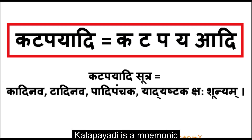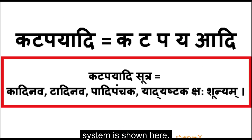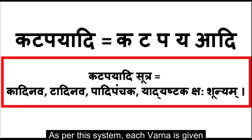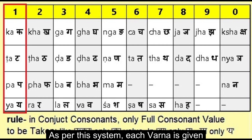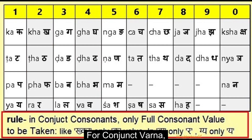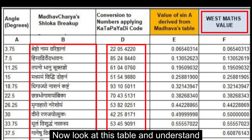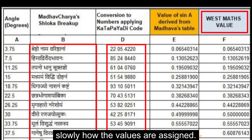Kathapayadi is a mnemonic for the Kathapayadi system. The sutra for the Kathapayadi system is shown here. As per this system, each varna is given a specific value from 0 to 9. For conjunct varna, the value for only the full varna is taken. Now look at this table and understand slowly how the values are assigned.